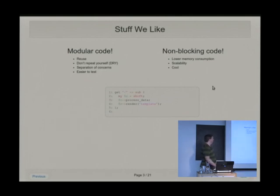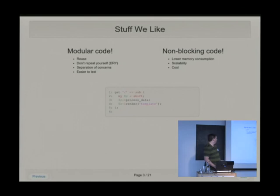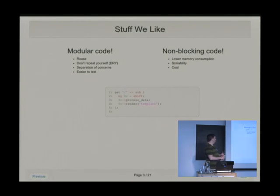So when we write our normal code, we always write modular code. Why? Because we like to reuse. We like not repeating ourselves, as we've already heard from several of the talks. We want to separate our concerns, and because those are easier to test.